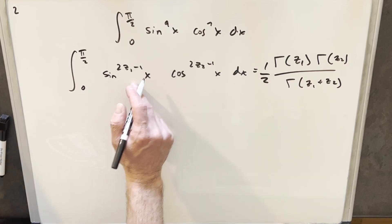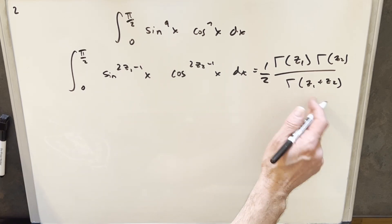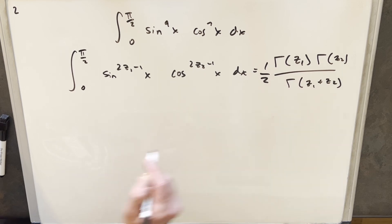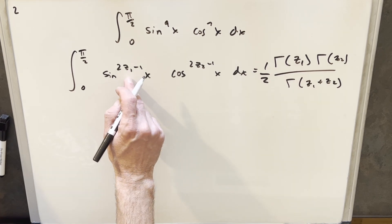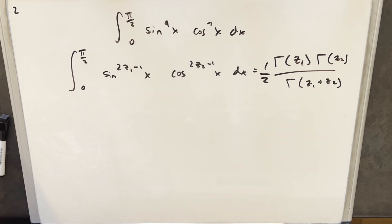So then all we need to do is we just need our z1 and z2 value, and we can go right to calculating the solution. We're going to say this exponent 2z1 minus 1 is equal to 9, so that's going to mean z1 must be 5.